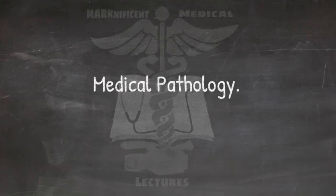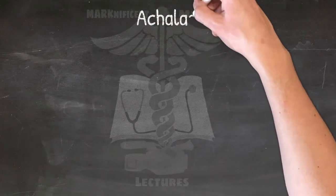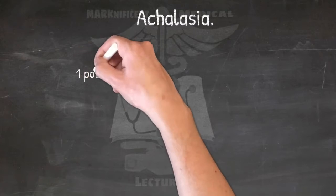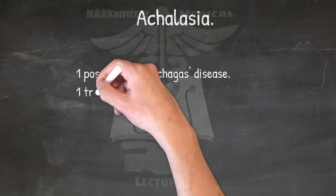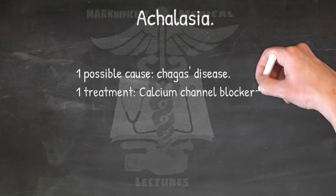Achalasia: this is a serious condition that affects the esophagus at the lower sphincter, where it fails to open up during swallowing. Achalasia has one possible cause and one treatment. One possible cause: Chagas disease. One treatment: calcium channel blockers.